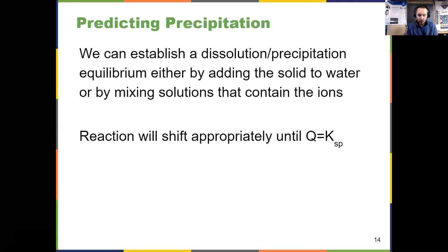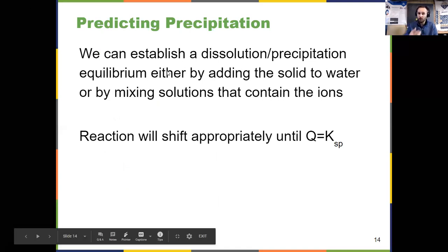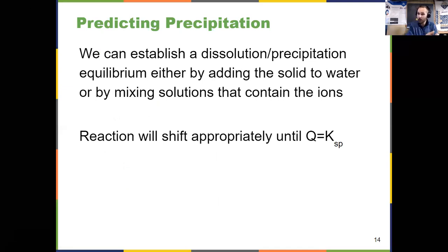That is probably the focus of 15.1, determining if something will precipitate or not. We can establish these dissolution precipitation equilibria by adding solid to water. But the other one is thinking about mixing two separate solutions together that contain the two separate ions. Now they come together and the question is, will they precipitate? Because your reaction is going to shift and fix itself until Q is equal to KSP. So we need to ask ourselves, when it's doing that, is it going to dissolve or is it going to precipitate?